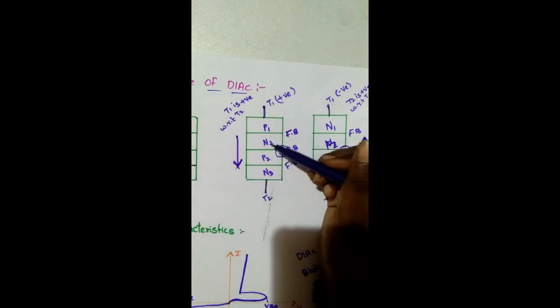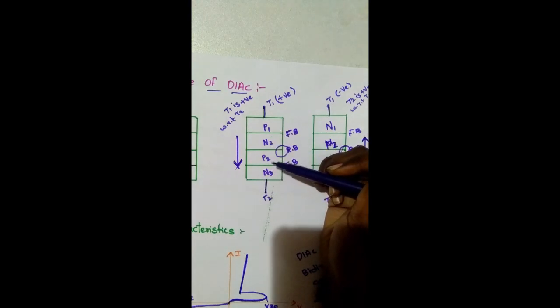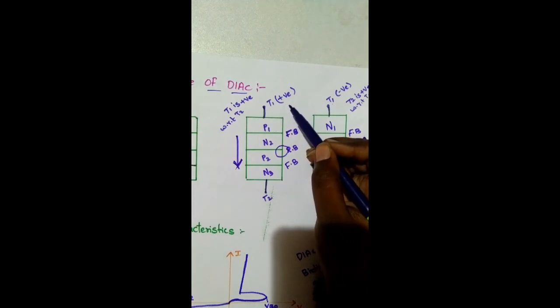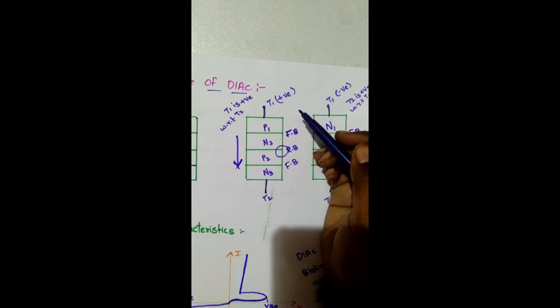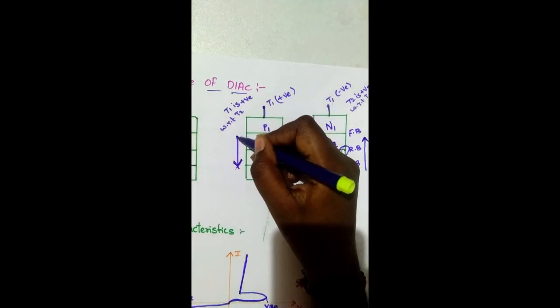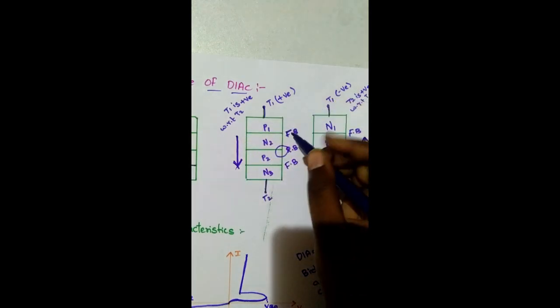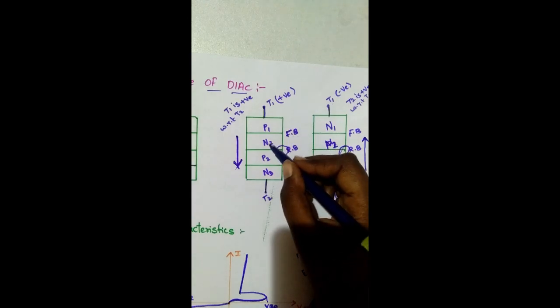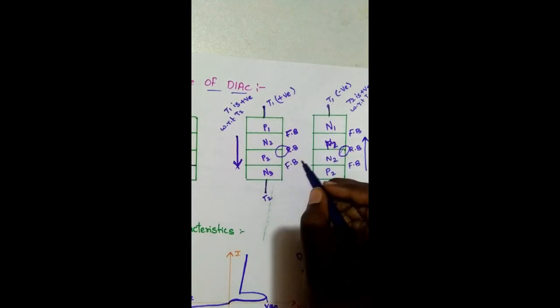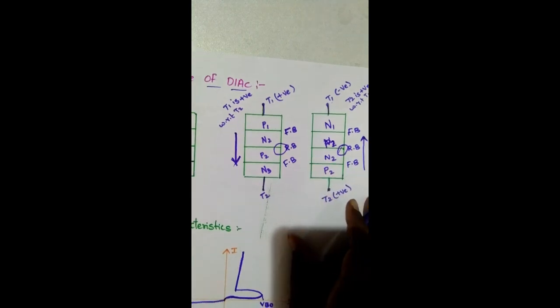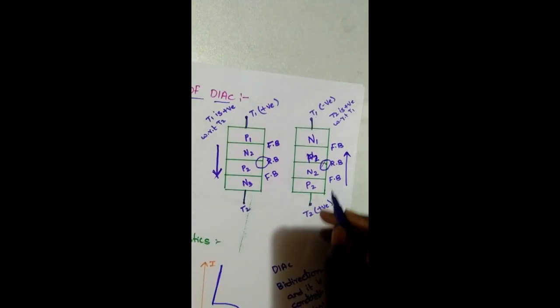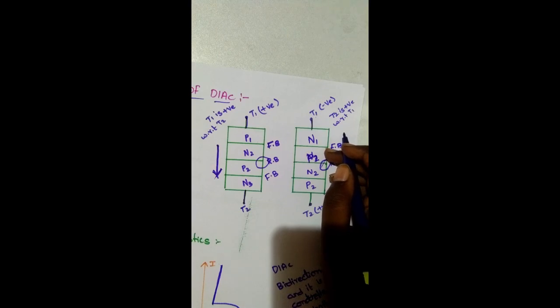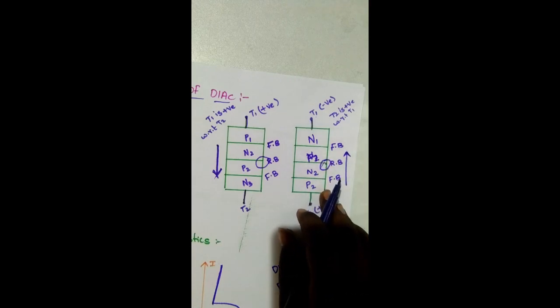When T1 is positive with respect to T2, the layers P and PN start conducting when the voltage of T1 is more than the breakover voltage. Then conduction of the DIAC starts: the P1-N1 junction is forward biased, N2-P2 junction is reverse biased, and P2-N3 junction is forward biased. When T2 is positive with respect to T1, the layers N1, P1, N2, P2 junction starts conducting when the voltage of T2 is more than the breakover voltage.